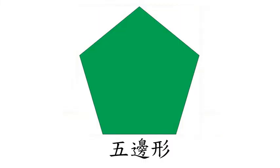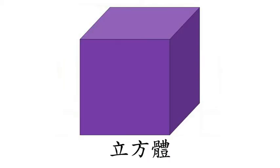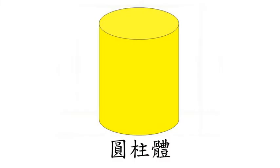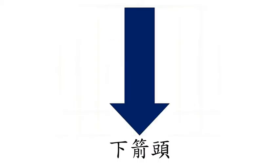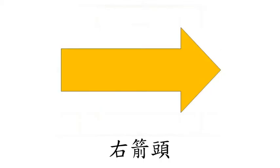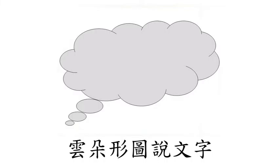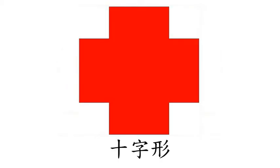五边形。六边形。八边形。立方体。圆柱体。上箭头。下箭头。左箭头。右箭头。云朵形图说文字。